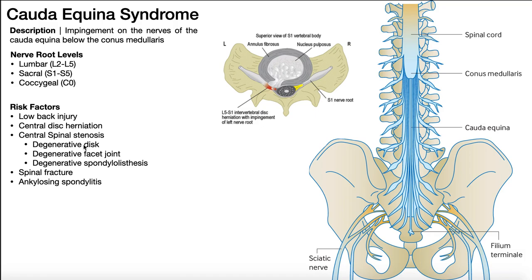Central spinal stenosis can result from a degenerative disc. Discs can dehydrate with age and undergo degenerative processes where they thin, and then you have the vertebrae coming closer together — that's called spondylosis. You can also have degenerative facet joints, which also brings the vertebrae closer together and compresses the vertebral canal. Then there's degenerative spondylolisthesis, where the superior vertebra translates anteriorly relative to the one below. The most common site is L5 and S1, where L5 would translate anteriorly relative to S1, causing narrowing of the vertebral canal and potential compression on the cauda equina.